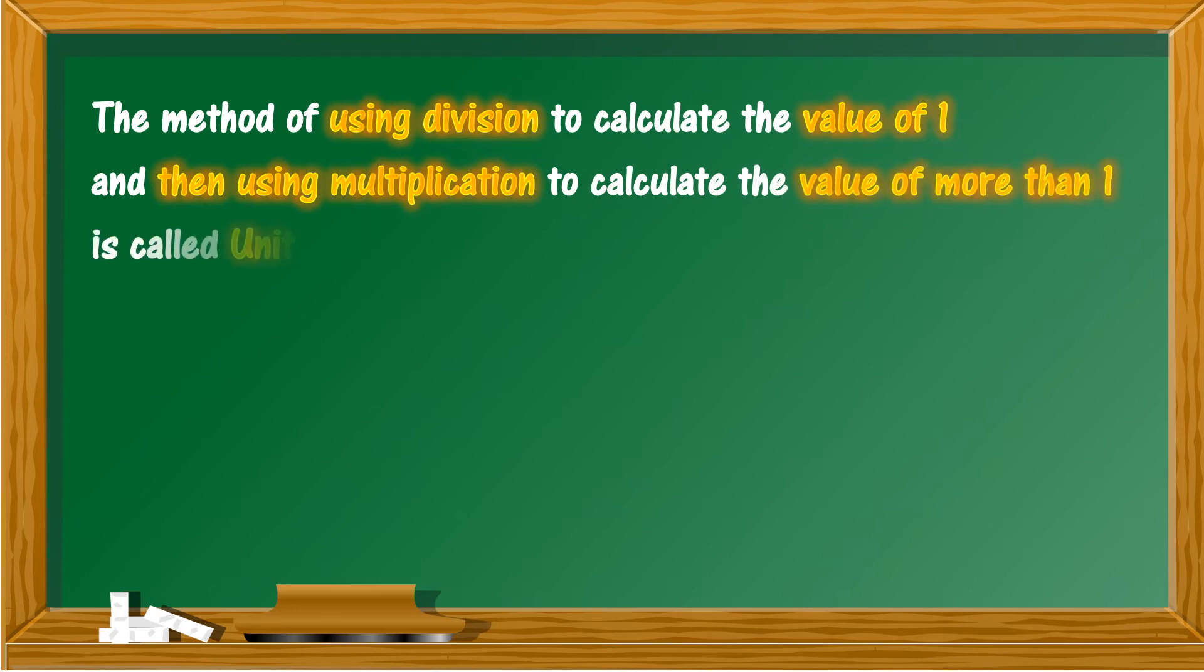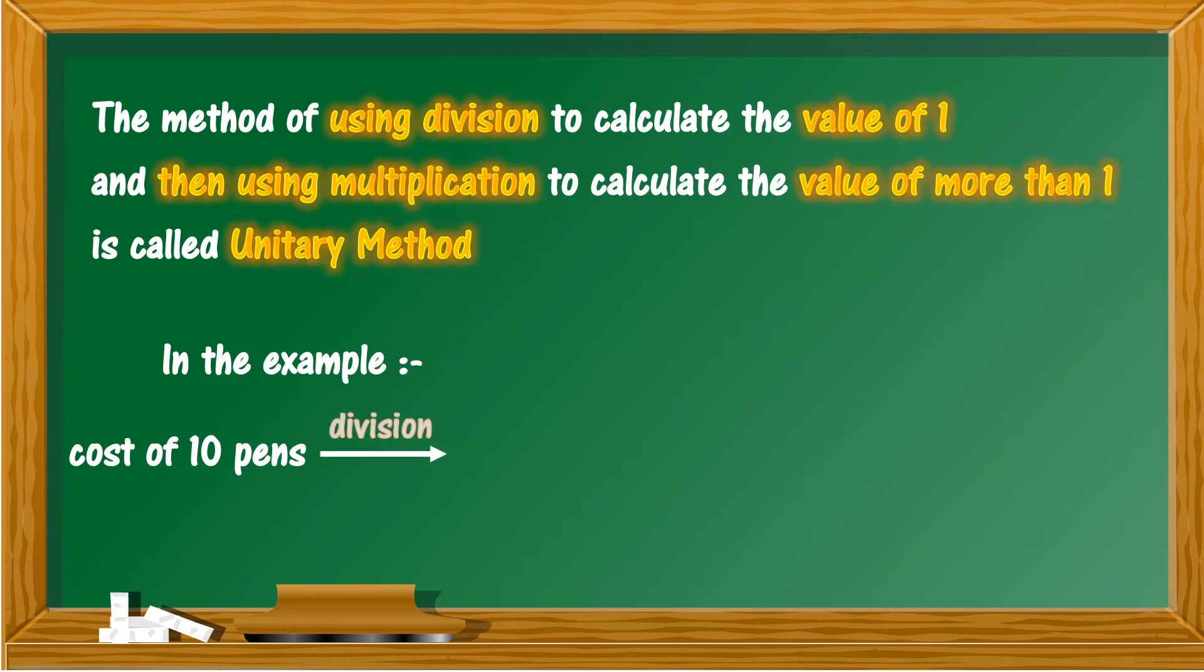In the example that you just saw, from the cost of 10 pens, Ravi used division to find the cost of one pen, and then from the cost of one pen, Ravi used multiplication to calculate the cost of six pens.